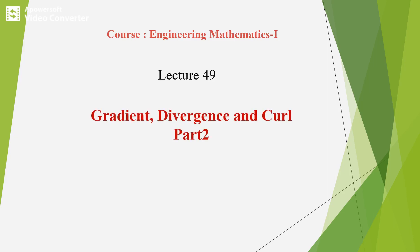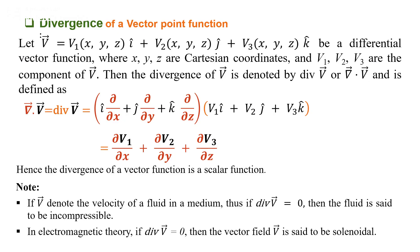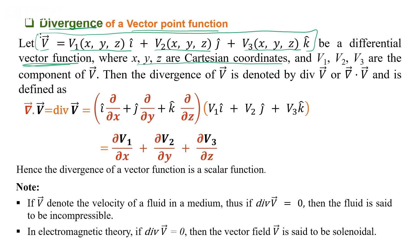Lecture 48: Gradient, Divergence, and Curl. The divergence is defined for a vector point function. If we have a vector v which is a function v1·i + v2·j + v3·k — a differential vector function where x, y, z are the Cartesian coordinates and v1, v2, v3 are the components of vector v — then the divergence of v is denoted by div·v or del operator dot product of the vector, defined as del·v.